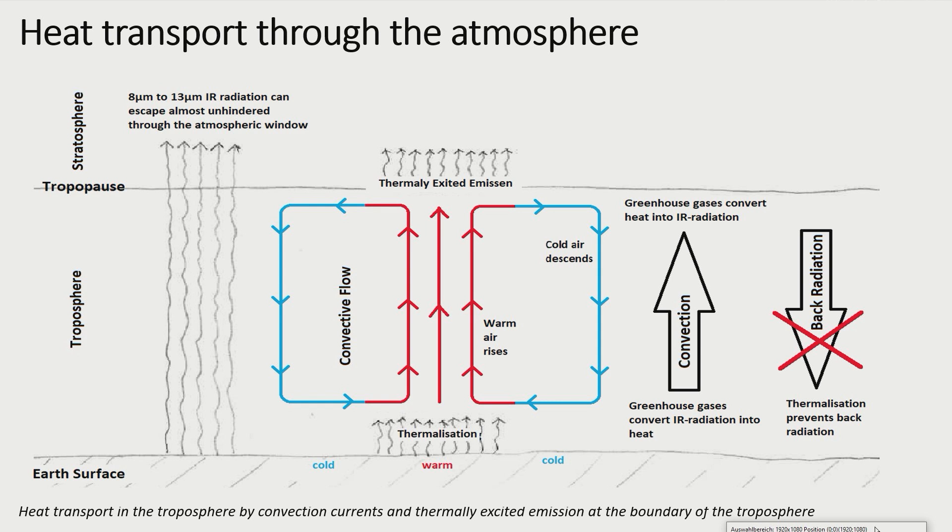In the upper atmosphere, the thermally excited emission converts the convectively transported heat energy into infrared radiation that can escape into space.